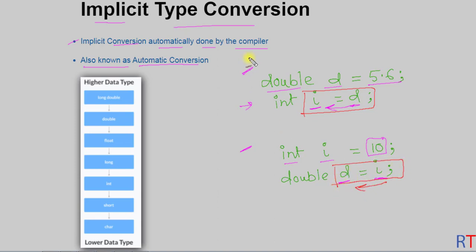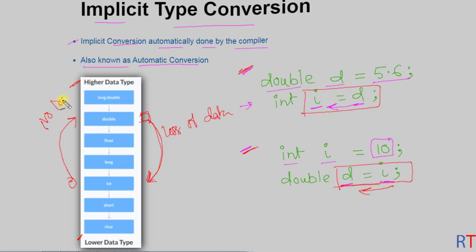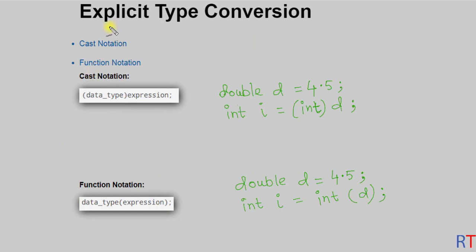So here we have one conversion from integer to double, which is happening automatically by the compiler. In the first example we are converting from double to integer — because we are converting from a higher data type to a lower data type, there is going to be loss of data. In the next example we are converting from integer to double, which is a lower to higher data type conversion, so there is going to be no loss of data.